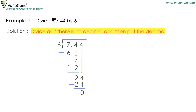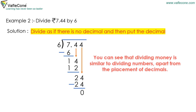Divide as if there is no decimal and then put the decimal. You can see that dividing money is similar to dividing numbers apart from the placement of decimals. So the answer is rupees 1.24.